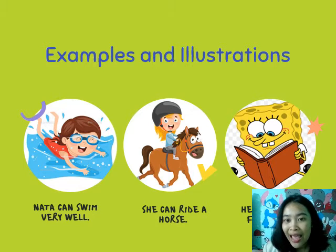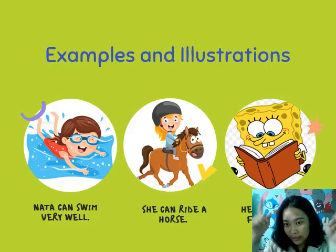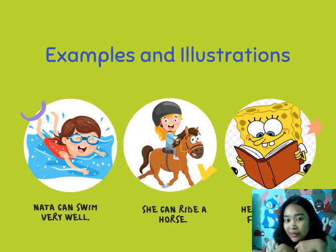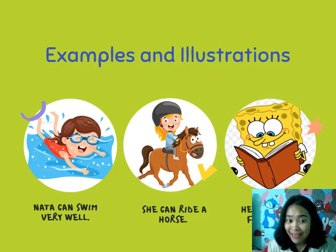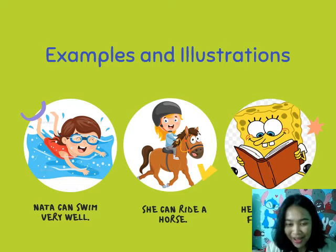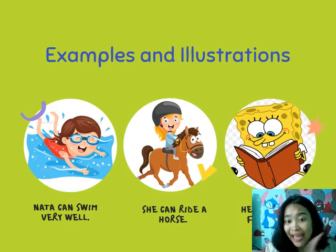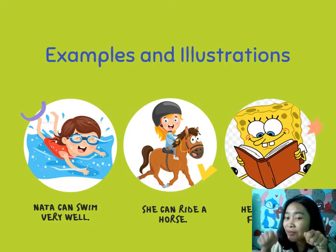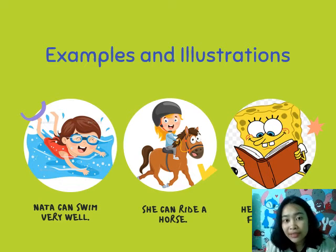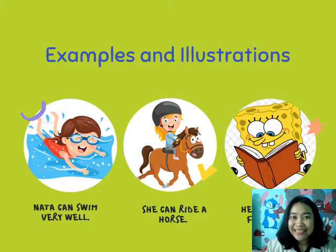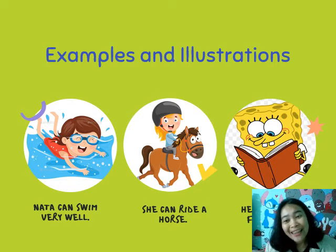Now let's take a look at the examples. The first example: 'Nata can swim very well' — Nata bisa berenang dengan baik. The second example: 'She can ride a horse.' The third example: 'She can read fluently' — Nata bisa membaca dengan lancar.